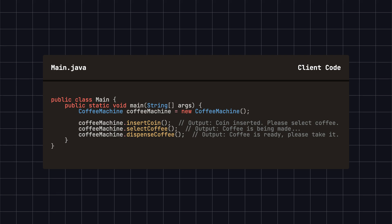Finally, in the client code, we create a coffee machine object and sequentially execute the actions of inserting a coin, selecting coffee, and dispensing coffee. When we call the insert coin method, the coffee machine transitions from idle state to selecting state and prompts the user to select coffee. When we call the select coffee method, the coffee machine enters the dispensing state and starts making coffee. Finally, when we call the dispense coffee method, the coffee machine informs that the coffee is ready and switches back to idle state, prepared for the next use.